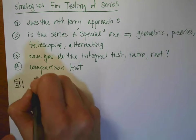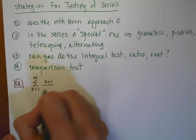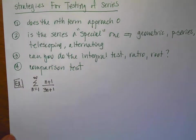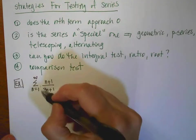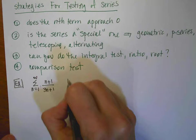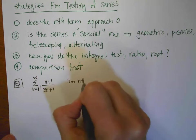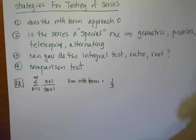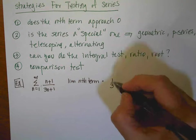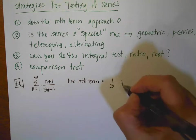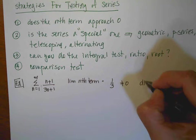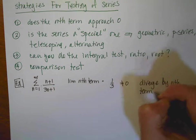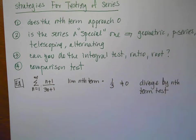So the first situation: I have the sum from n equals 1 to infinity of n plus 1 over 3 to the n plus 1. Depending on how you're processing information, this is approaching a horizontal asymptote of a third. So the limit of the nth term is going to equal a third — and because the limit doesn't equal zero, this is going to diverge by the nth term test.